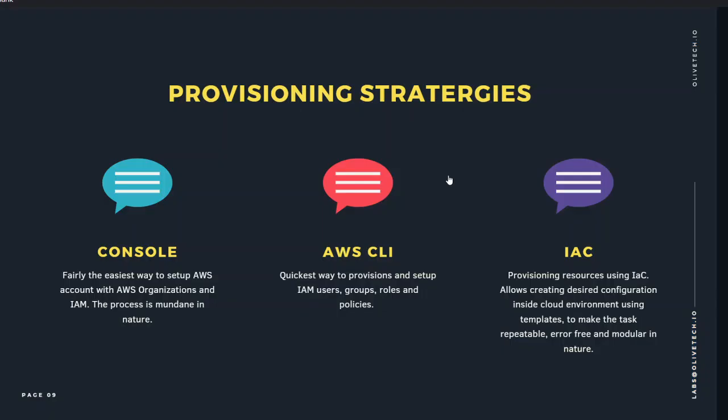As I mentioned, the three provisioning strategies we'll have in front of us to carry out these deployments and the landing zone solution will be: first, the console — to show that it's the easiest way to set up anything in your account, but not the ideal way and only good for once-in-a-while tasks. When we start automating and speeding up delivery of our solution, we'll look at strategies using AWS CLI and infrastructure as code as well.